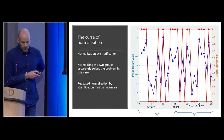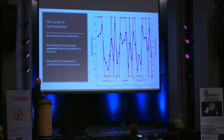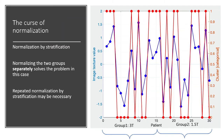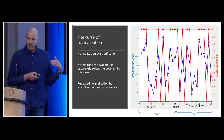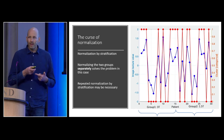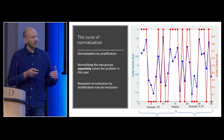What I had to do was normalize the data first based on hardware grouping: take only patients from the 1.5 Tesla, apply z-score normalization, then repeat for the 3 Tesla group. Normalizing the groups separately solved the problem — we capture biological differences again. The drawback is that you split the data into smaller groups, reducing power and reliability. You might need to do this for site, hardware, and other factors, and it can grow exponentially.